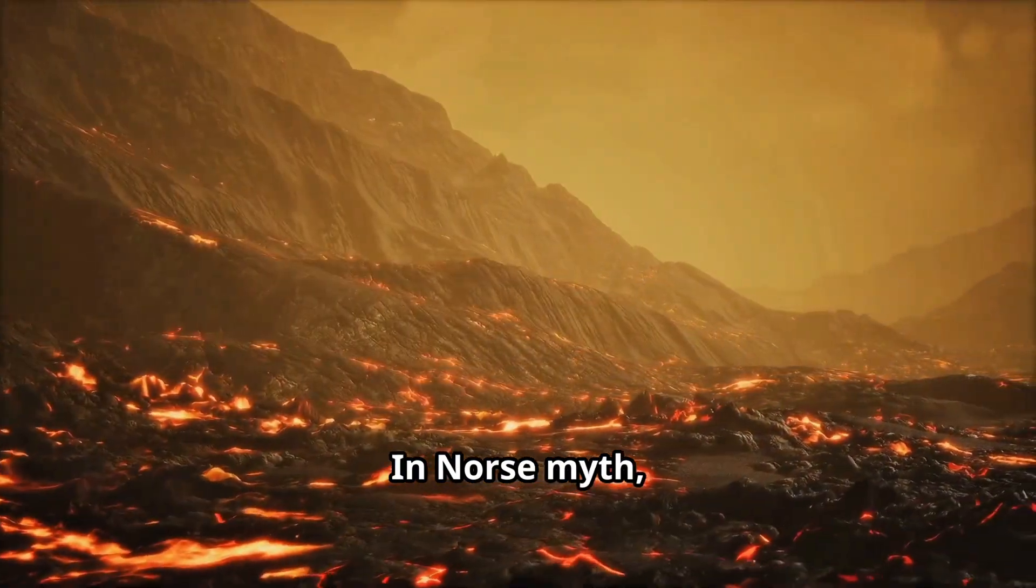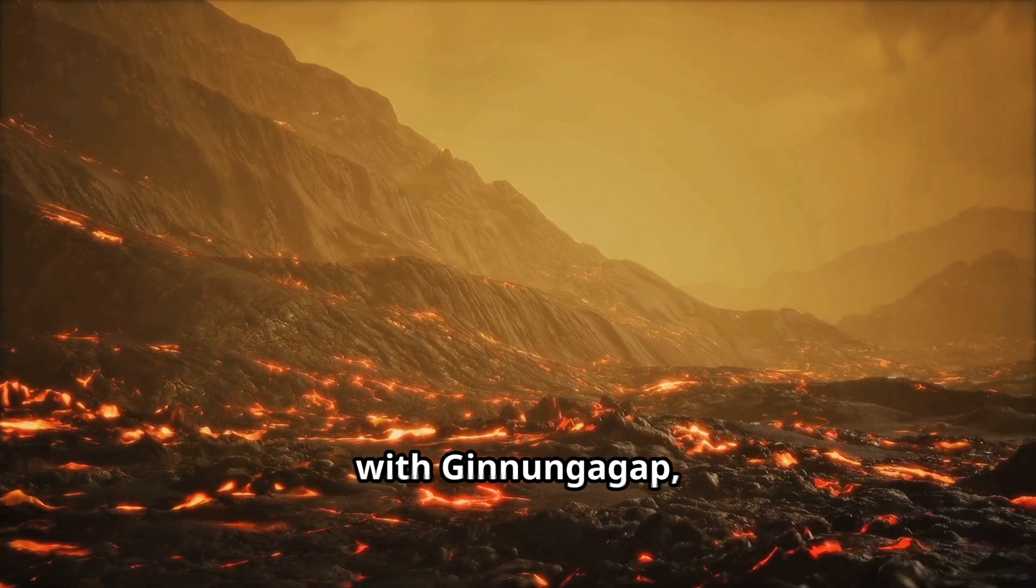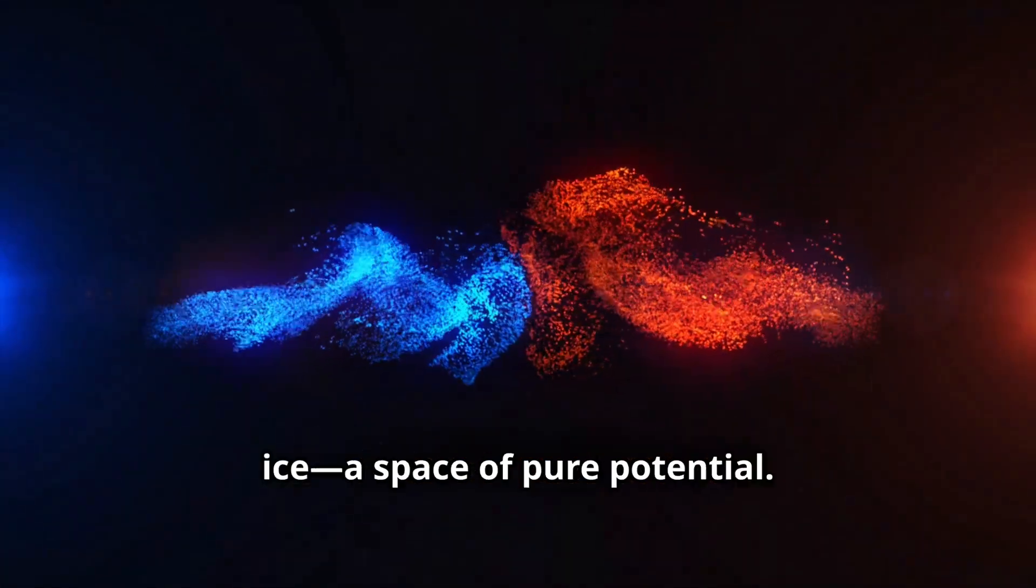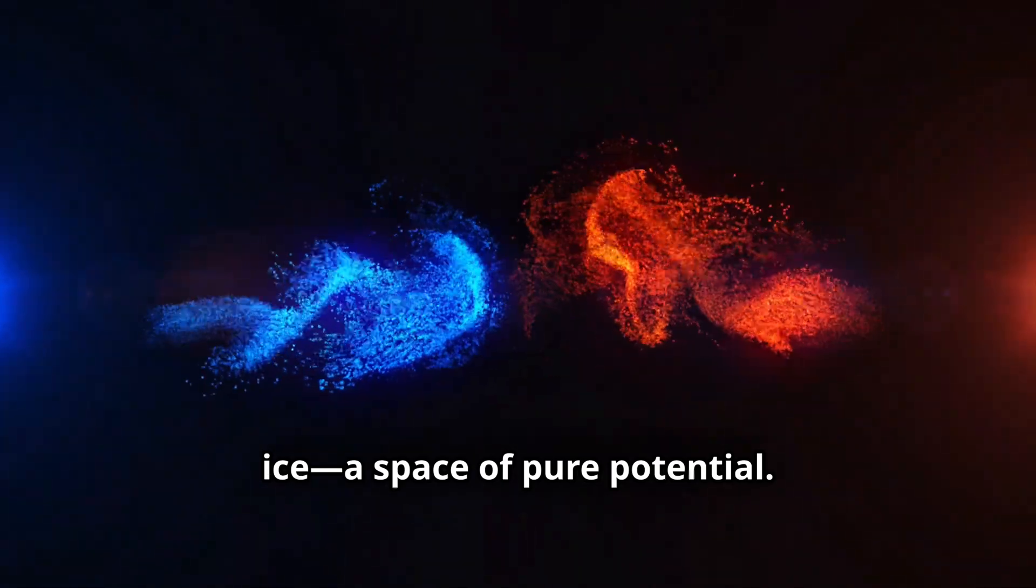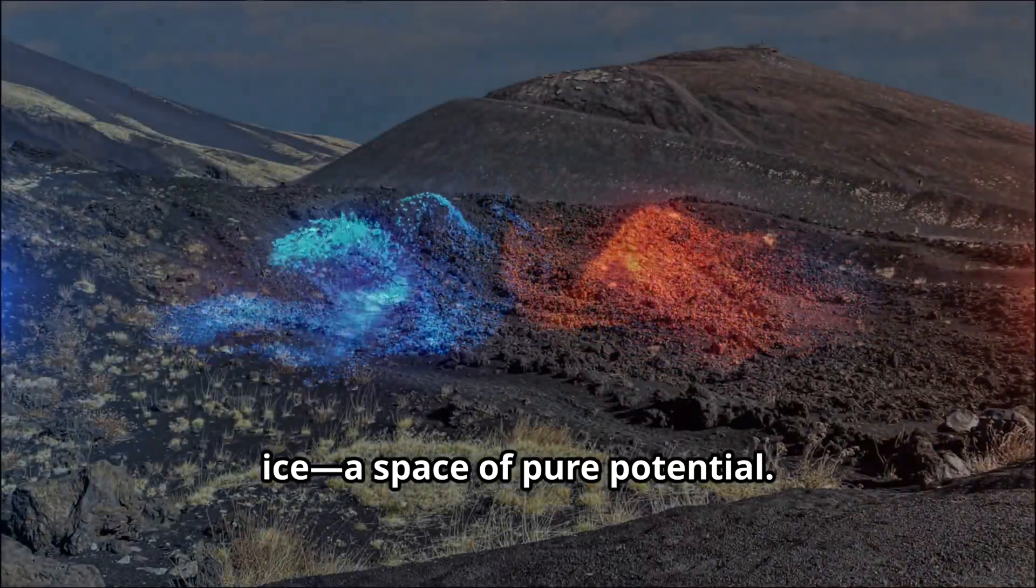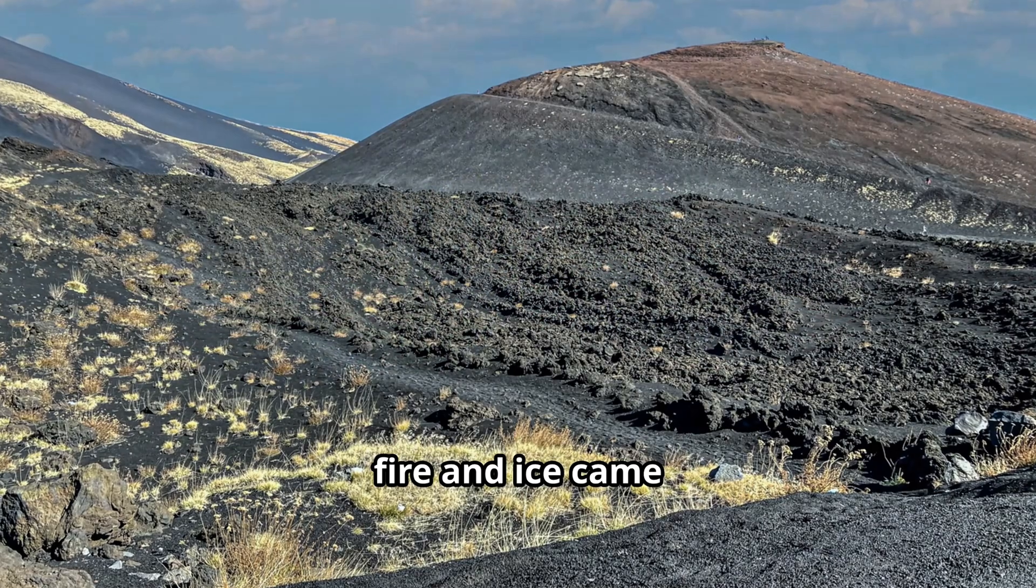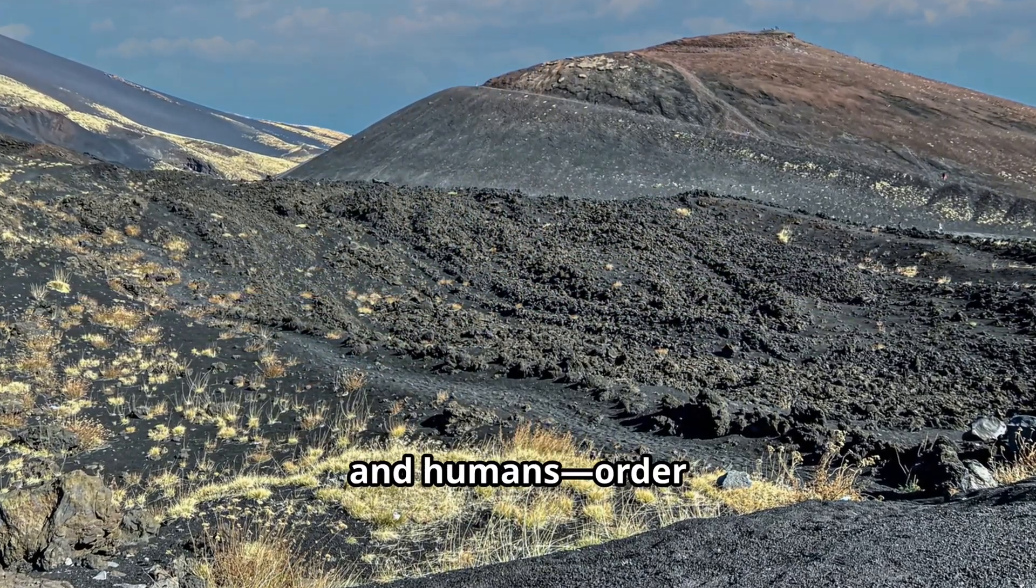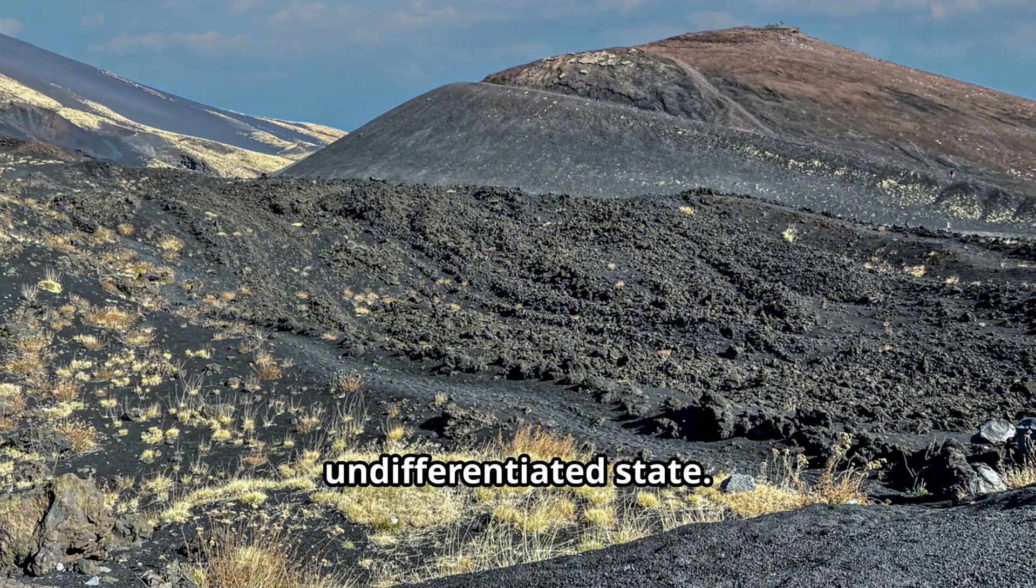In Norse myth, creation begins with Ginnungagap, a primordial abyss between a realm of fire and a realm of ice - a space of pure potential. From the meeting of fire and ice came Ymir. From him, life - the worlds of gods and humans. Order from an undifferentiated state.